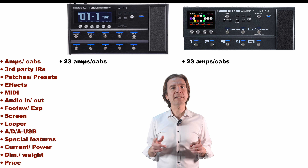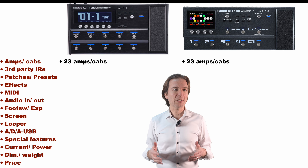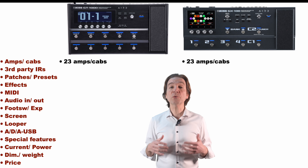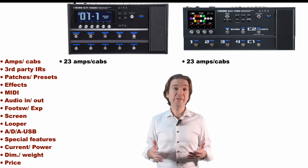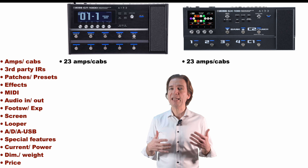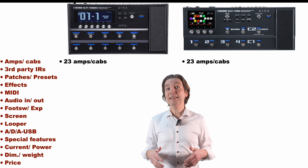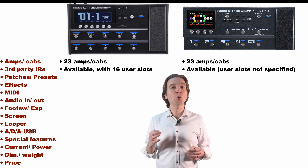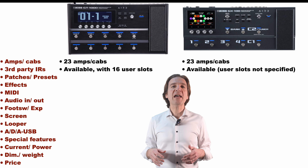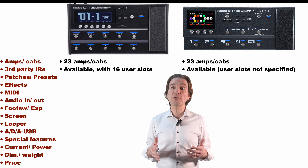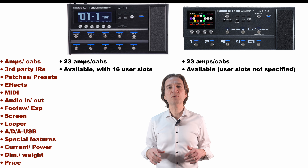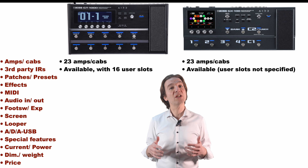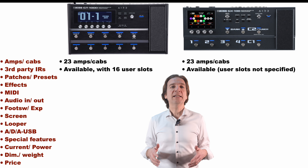First of all, we have 23 amps and cabs in both units. Furthermore, both units are using the BOSS AIRD technology, so having the same number of amps and using the same modeling technology, I think they are going to sound the same. Both units offer the possibility to load third-party IRs, and we have 16 user slots in the GT1000, where I was not able to find the user slots available in the GX100, even if I think they are the same as the ones offered by the GT1000.